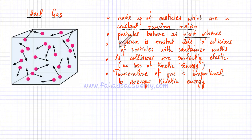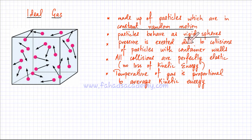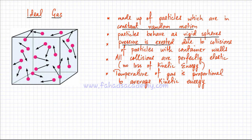The pressure that a gas exerts is due to collisions of particles with the container walls. The particles collide with the walls of the container, exerting some force, and force per unit area is pressure. That's how gases exert pressure — it is due to collisions of particles with the wall of the container.